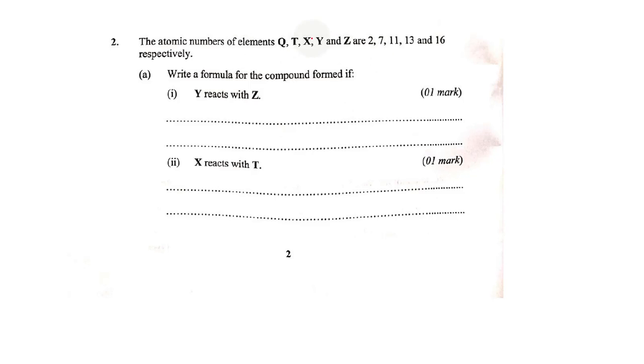That means they have given us the number of protons. Atomic number is number of protons of these elements. So if you have number of protons, usually you also have number of electrons because if they are atoms, that means it will be equal to the number of electrons. So we shall have to write the corresponding electronic configurations so that we can attempt the questions that are to follow.